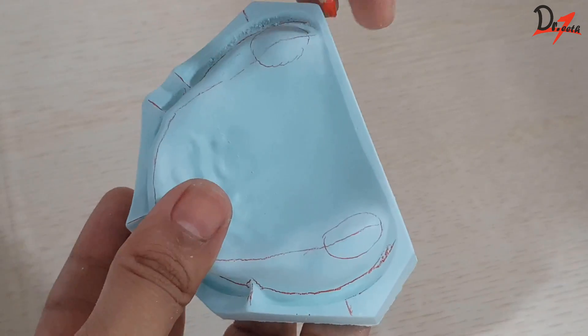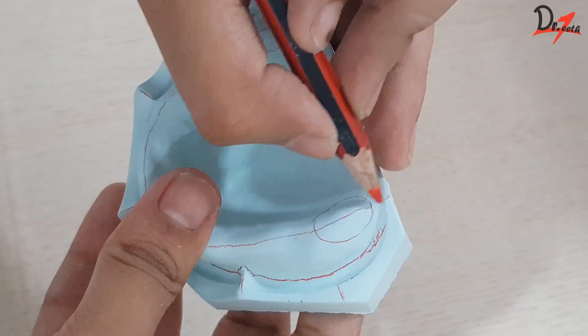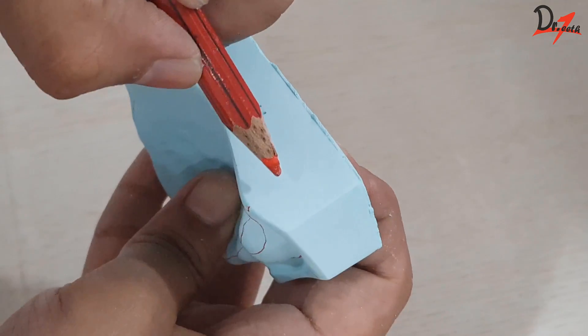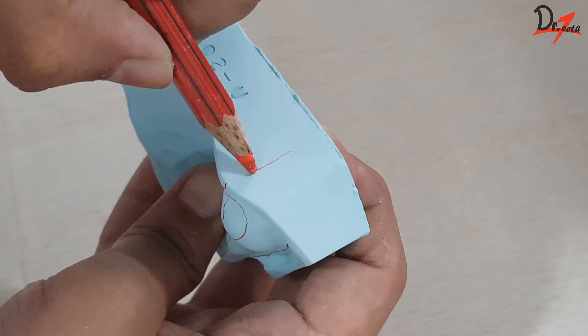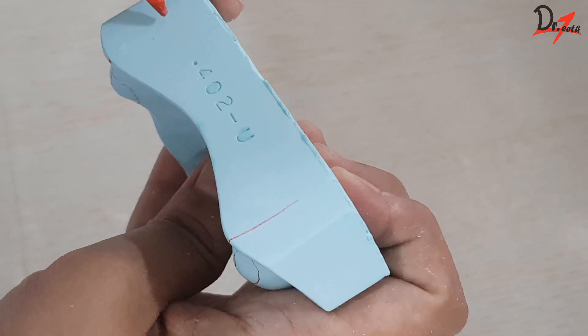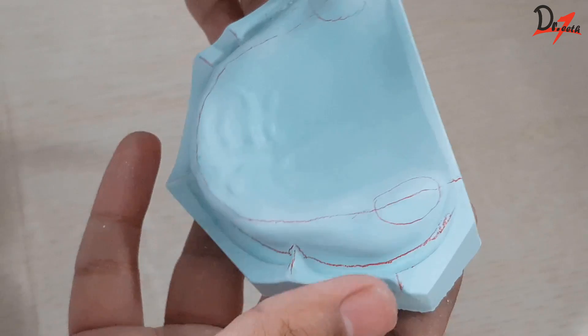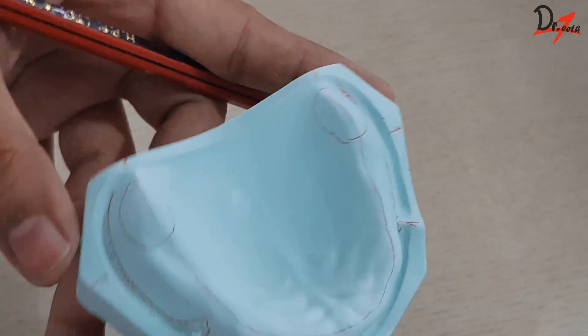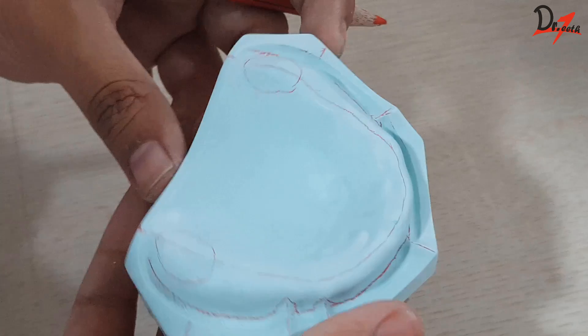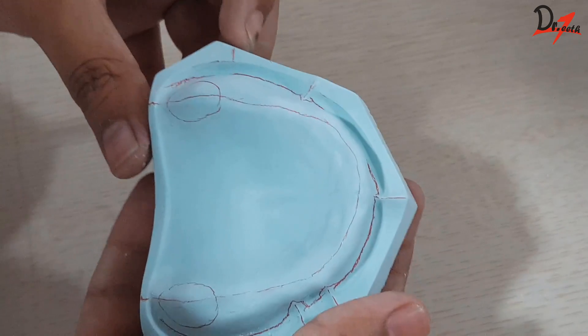Then extend the crest of the ridge line on the posterior surface and on the posterior cast. So this will help us during articulation. Also, this line will help us during making of the occlusal rim as well as during teeth setting, as we will see in the upcoming videos.